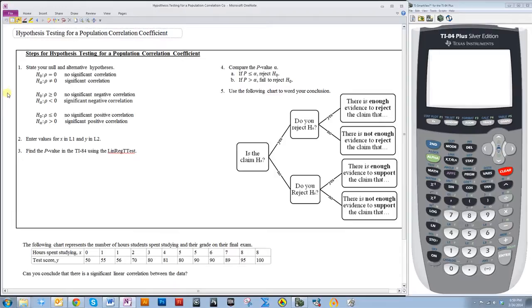First thing you need to do is state your null and alternative hypotheses. Now whenever you are stating your hypotheses, you always want to use the variable rho, which represents the population correlation coefficient.